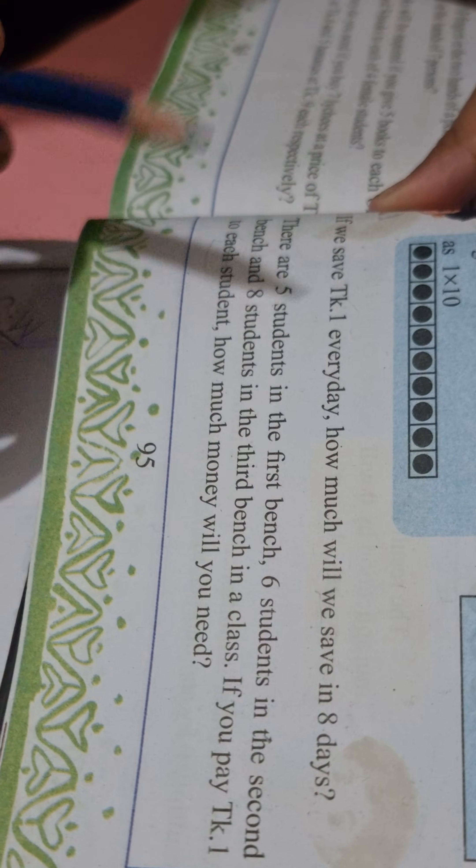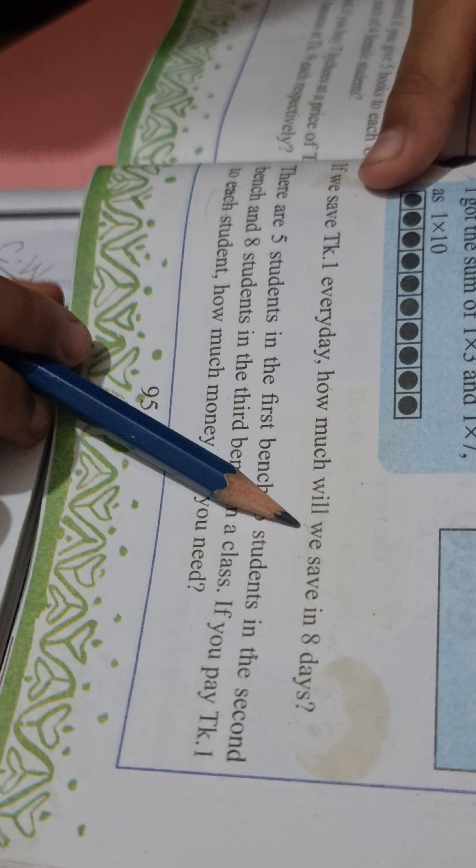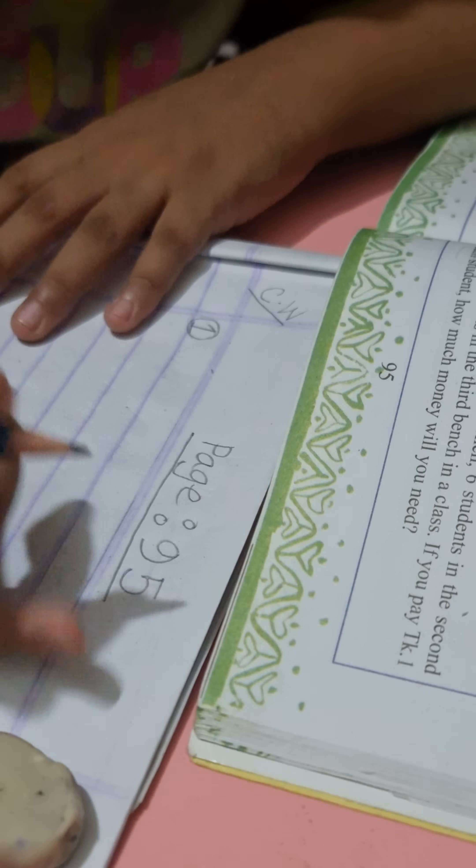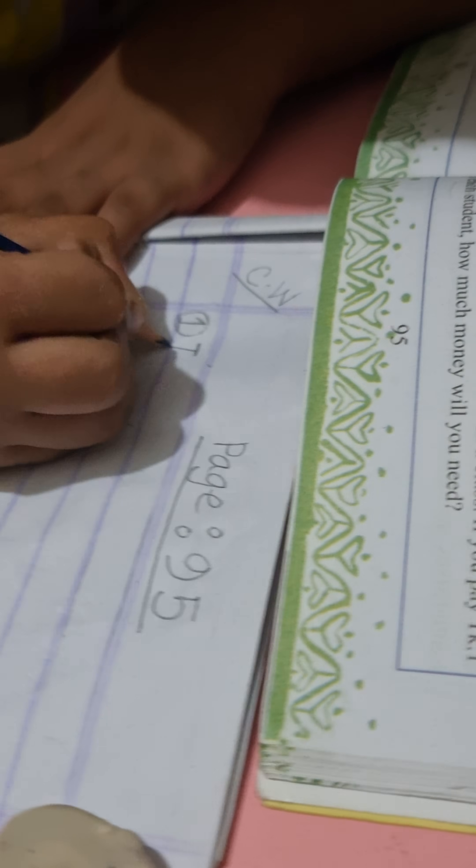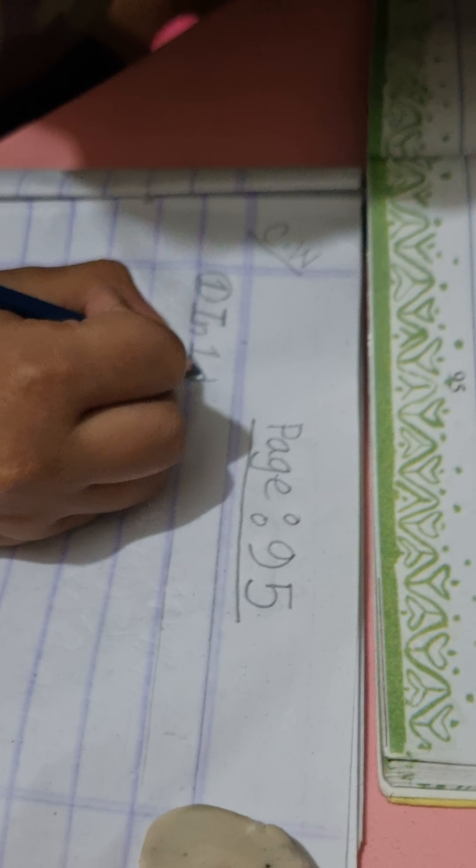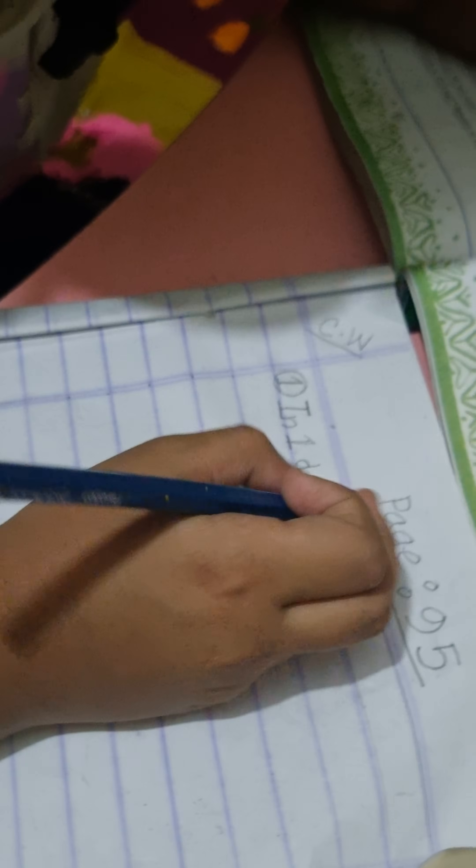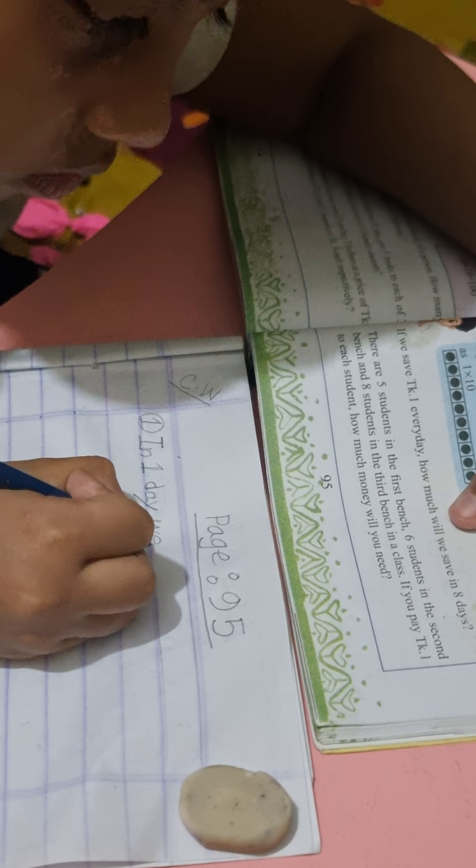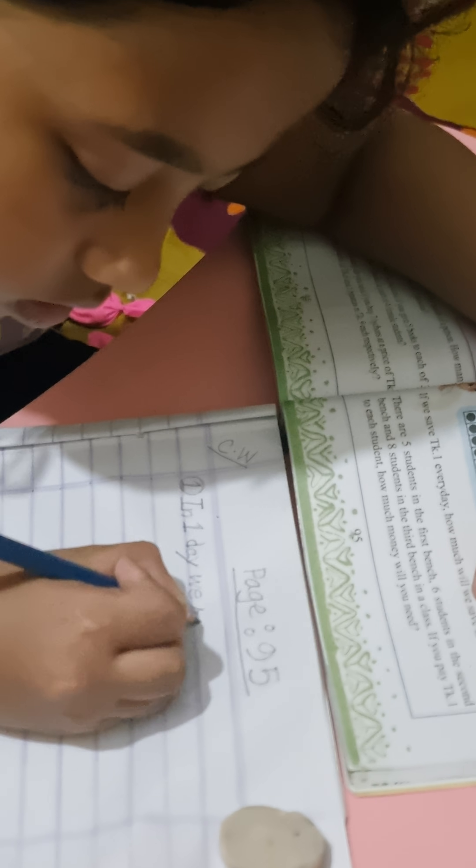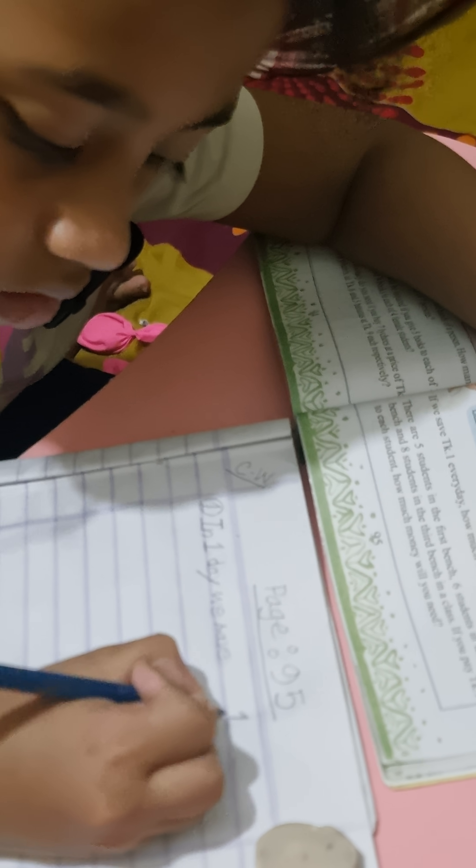Today I will share with you page number 95, problem number one and two. First of all, problem number one. If we save taka 1 every day, how much will we save in eight days? In one day we save one taka.